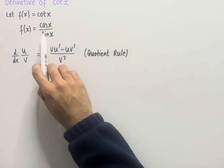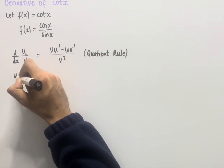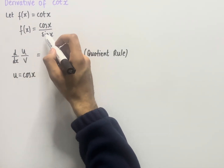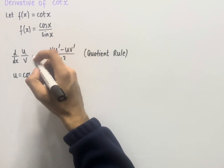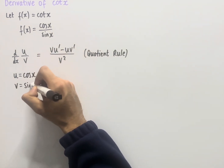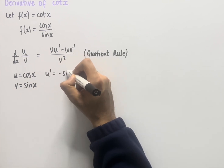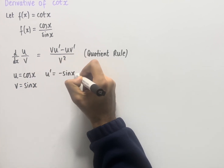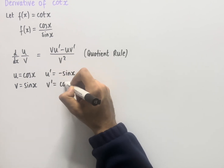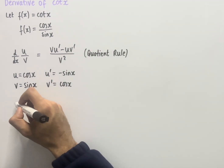So if we compare this with the function that we have, then u equals cos x and our denominator sin x equals v. Now if we work out u dash, we have that u dash equals minus sin x and v dash equals cos x.